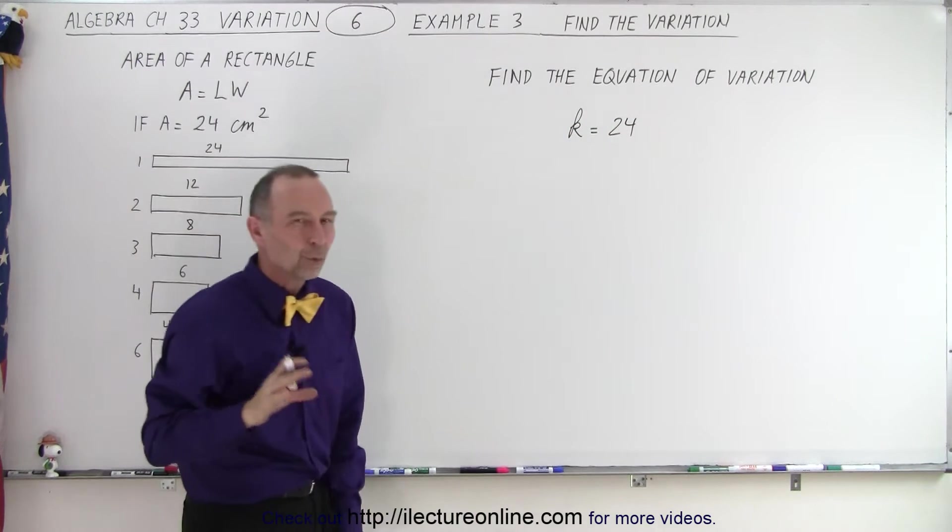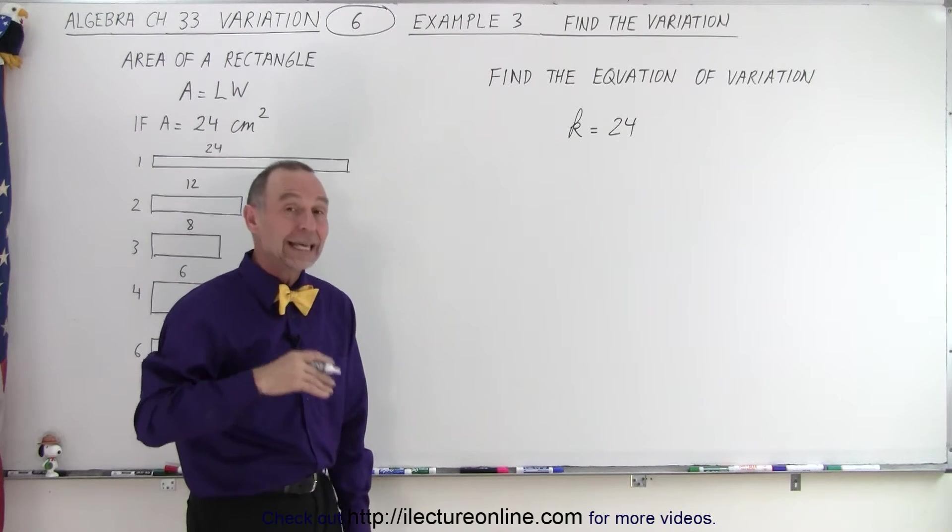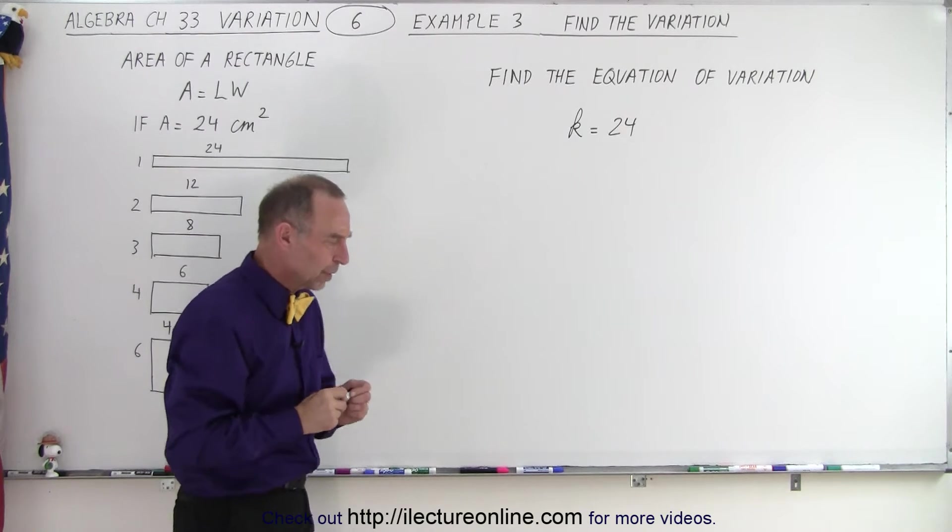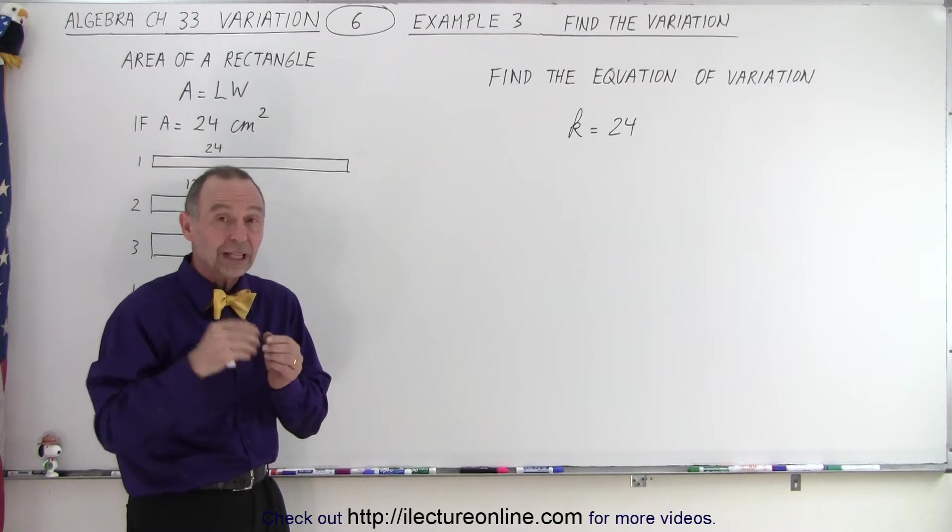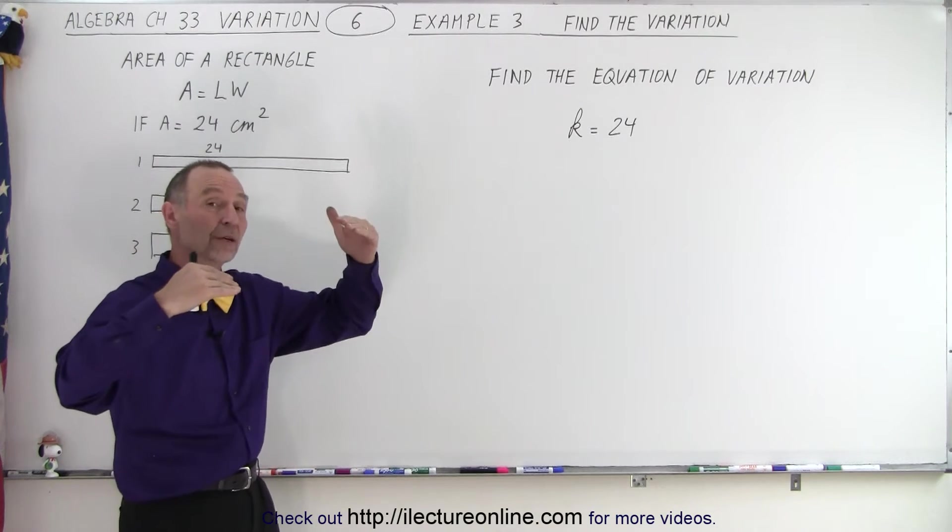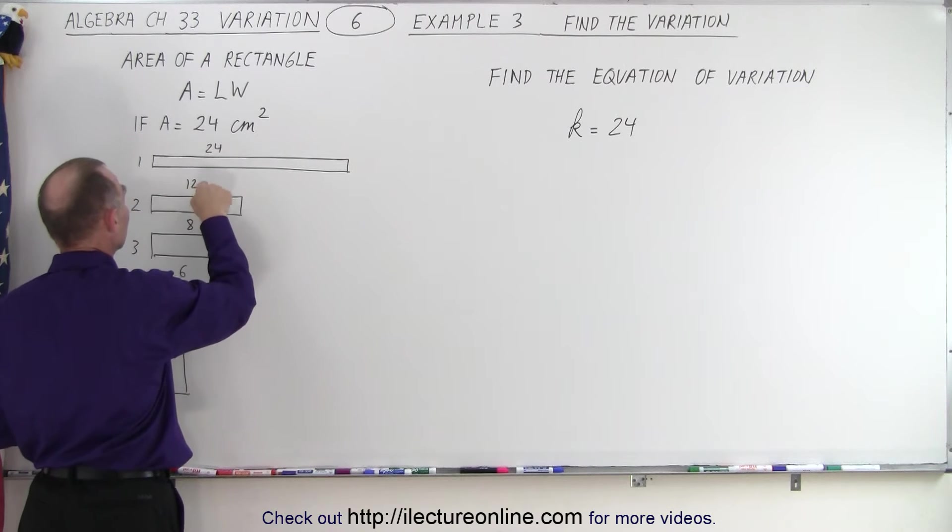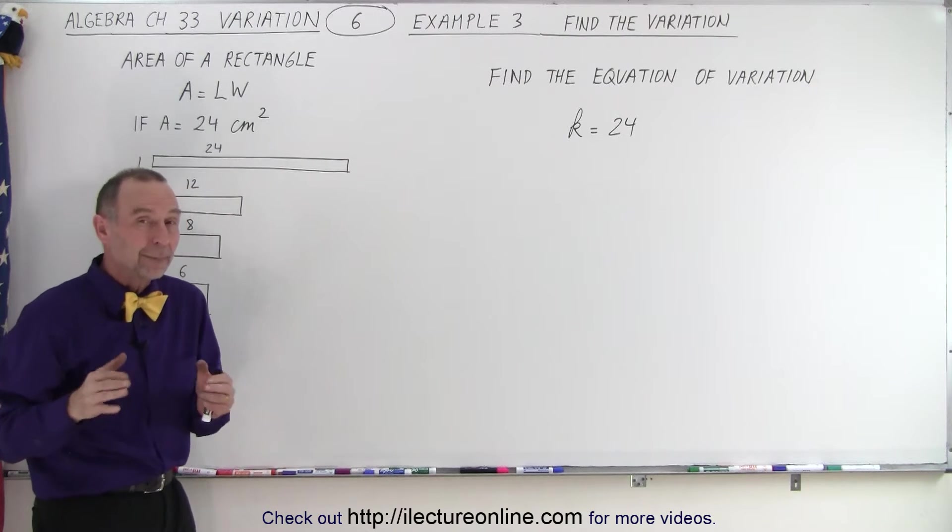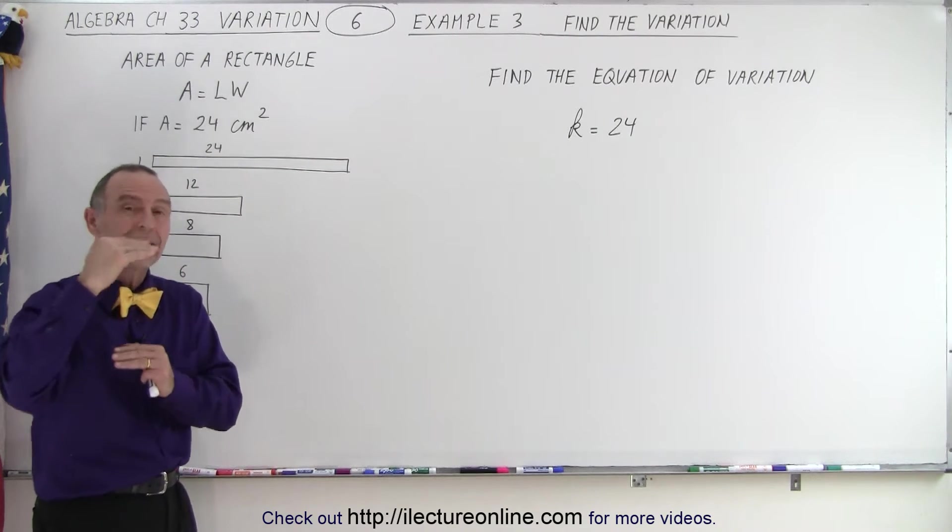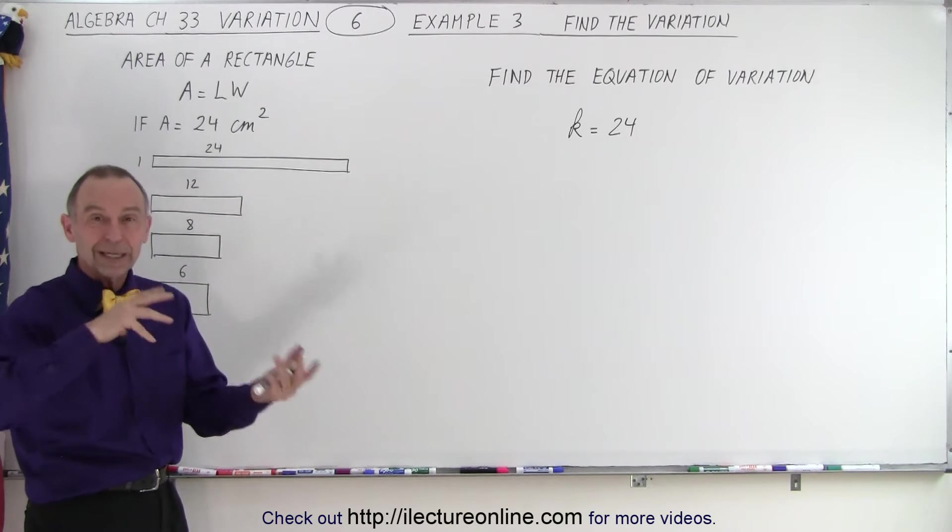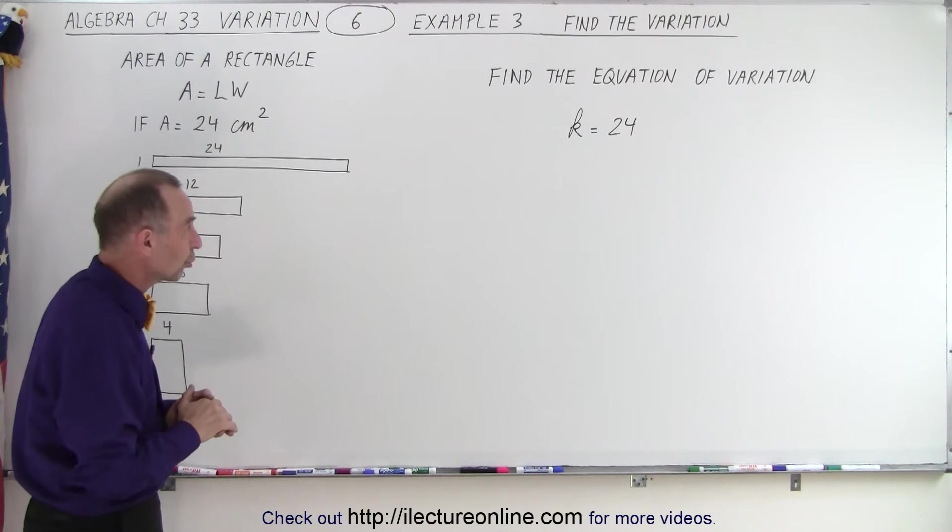Now, do we have a direct or an inverse variation? If it's a direct variation, then as one gets bigger, the other one gets bigger as well. So as the width gets bigger, we'd expect the length gets bigger. But that's not what's happening. As the width gets bigger, the length gets smaller, which means there must be an inverse relationship between the two.